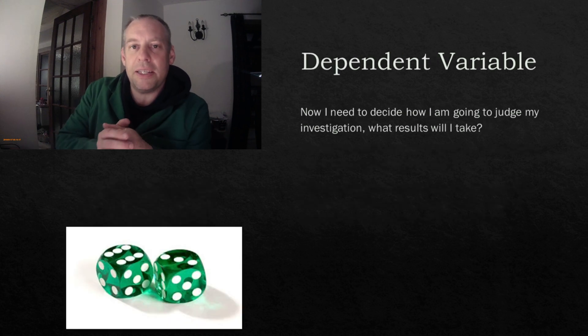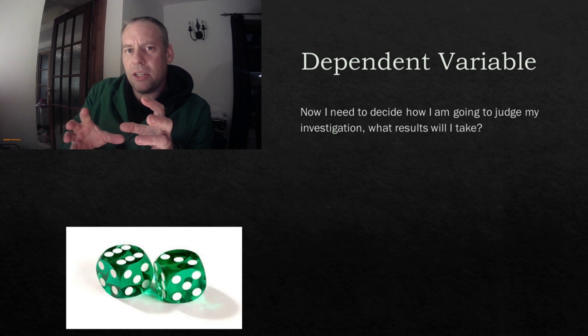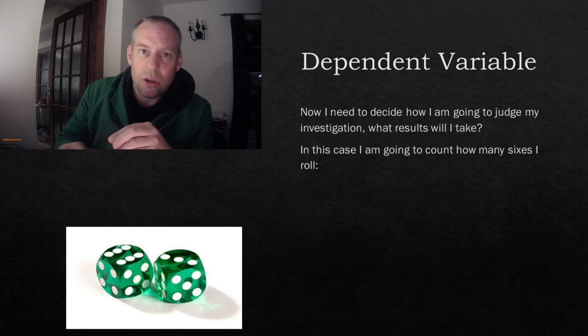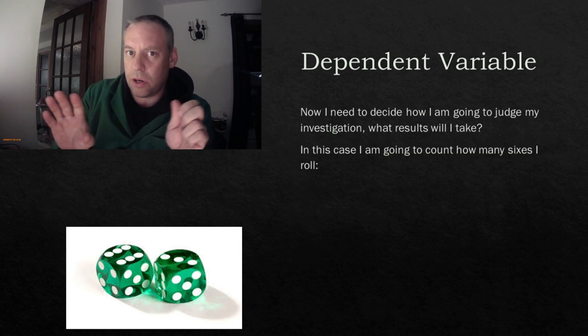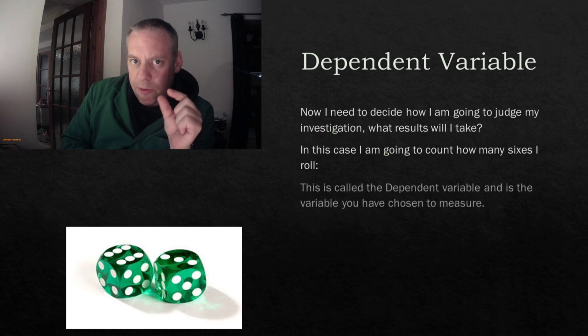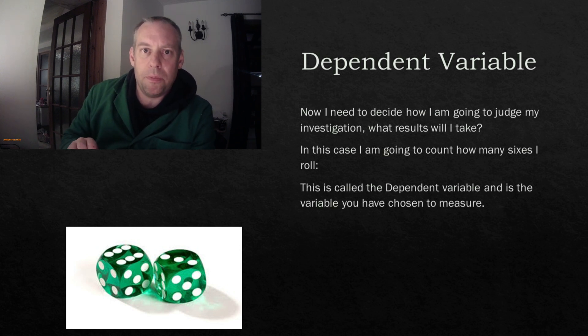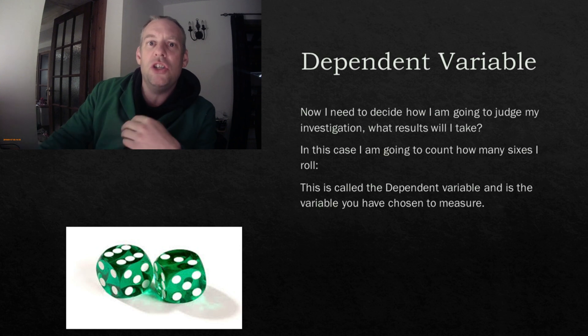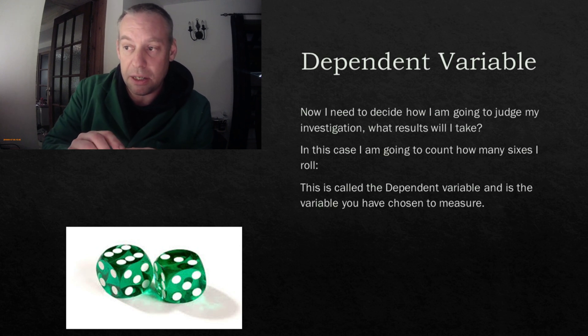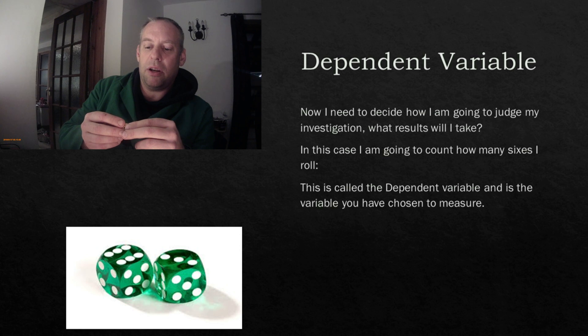So I've chosen the factor I want to investigate. The next thing I need to do when doing any science investigation is to work out how I'm going to measure this particular investigation. Now in this example it's quite easy. What I'm going to do is I'm just going to count how many sixes I roll. I'm going to roll the dice and if it's a six I'm going to count it. If I don't I'm just going to ignore it. And I'm going to find out after how many rolls how many I've got. Now this factor, this variable that we are going to be measuring, that is called the dependent variable. And the dependent variable is how I'm going to judge my investigation.